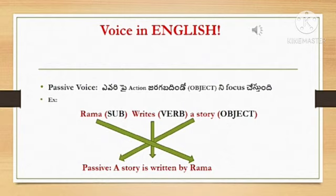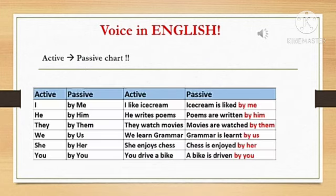That is the basic introduction of active voice and passive voice. Now we can see some active sentence forms and their passive forms with examples. First we can see — for the pronoun I, the passive conversion uses by me. For example: I like ice cream. By passive conversion: Ice cream is liked by me.